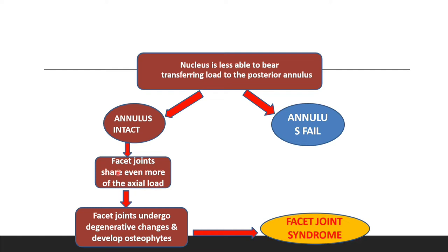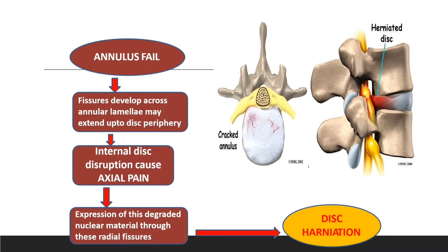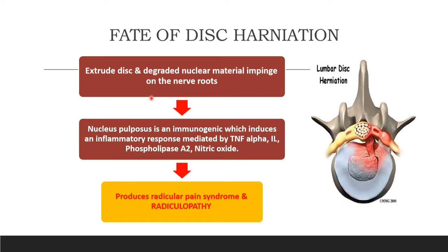Increased axial load to the posterior aspect of the vertebra can result in facet joint syndrome. If the annulus fails, that will result in disc herniation, which can impinge the nerve root and produce radiculopathy.